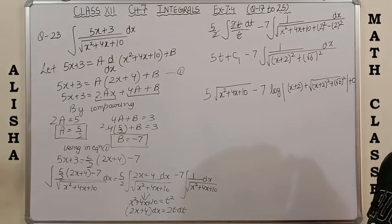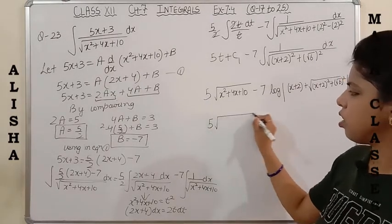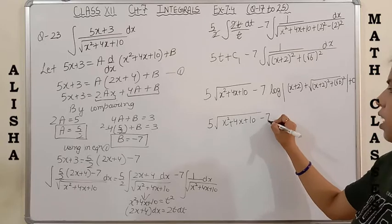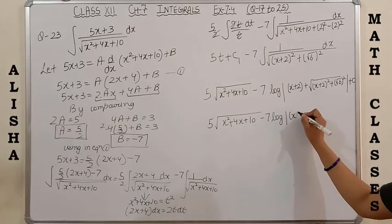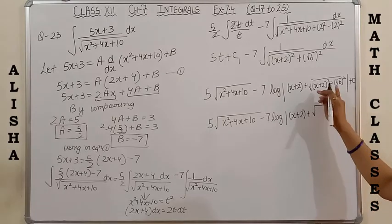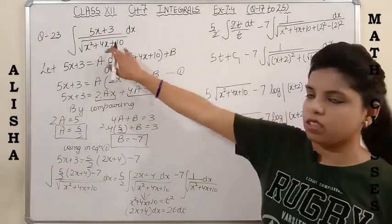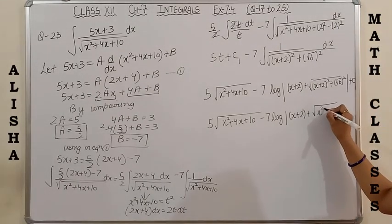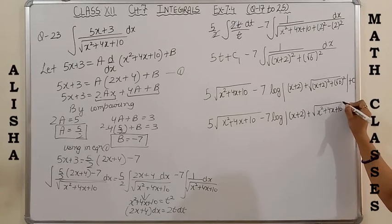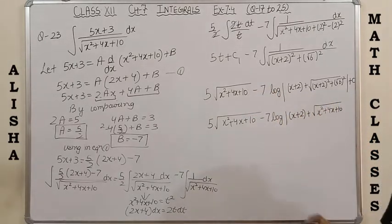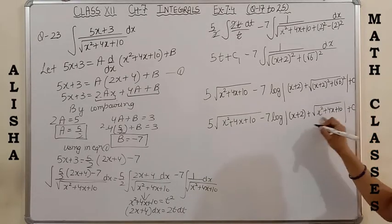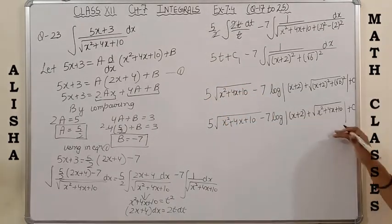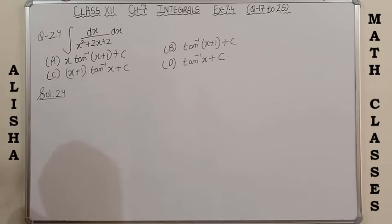The final answer is 5√(x²+4x+10) minus 7 log|(x+2) + √(x²+4x+10)| + C. Note that after solving (x+2)² + (√6)² you get back the same quadratic x²+4x+10, so no need to expand it separately. Please note this down.